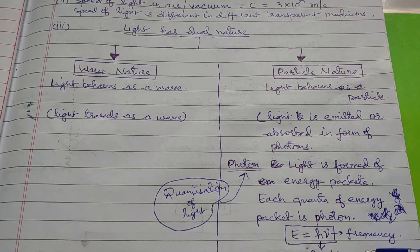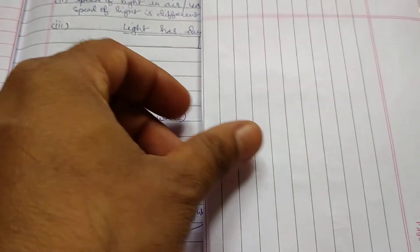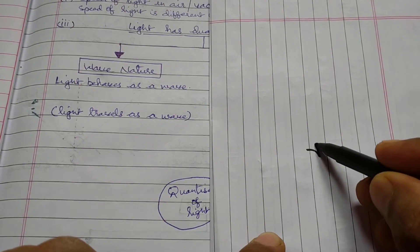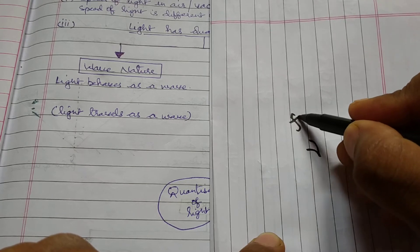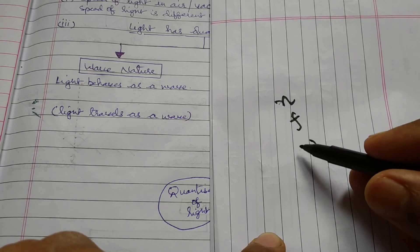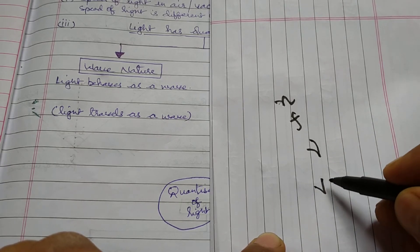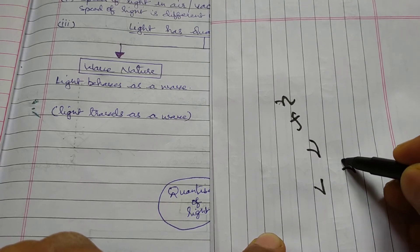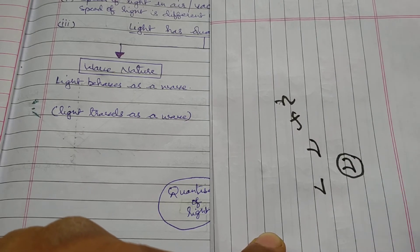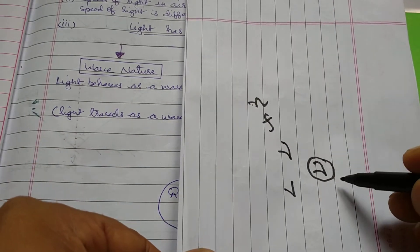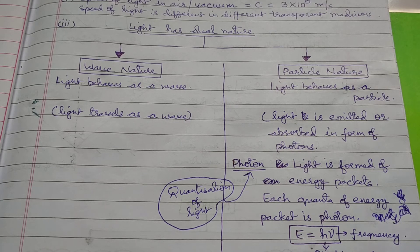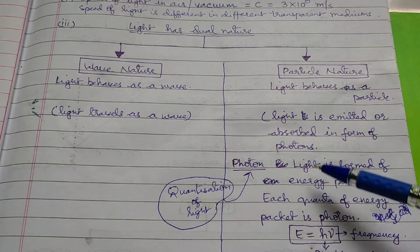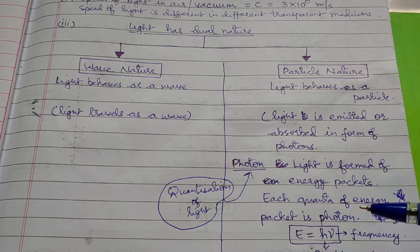Planck's constant h की value constant रहती है and its value is 6.6×10⁻³⁴ joule-second. Frequency को यहाँ पर ν (nu) से represent किया जाता है — usually हम frequency को f या n से represent करते हैं, but यहाँ ν (nu) use किया जाता है। ν (nu) frequency को represent करता है जो hertz में — cycles per second या vibrations per second — में express होती है। This property of light is known as quantization of light — light is formed of a large number of photons.